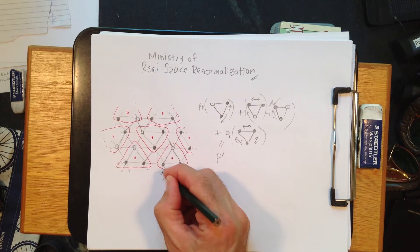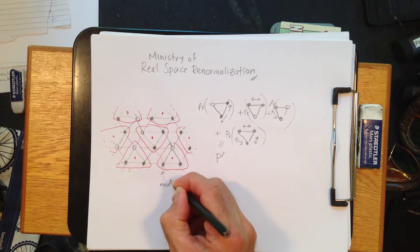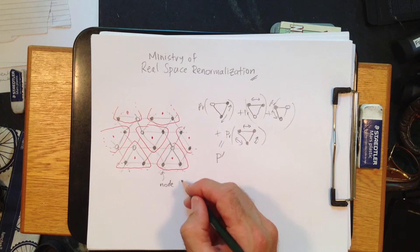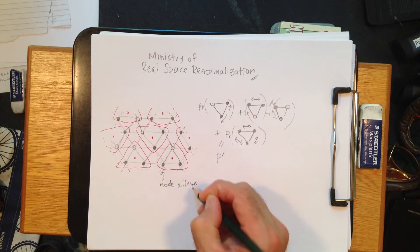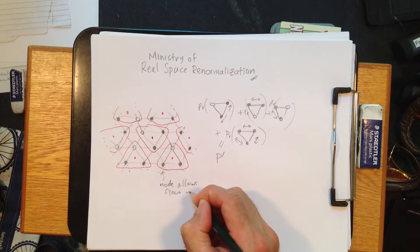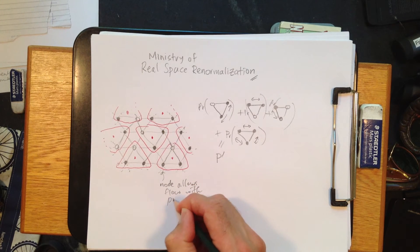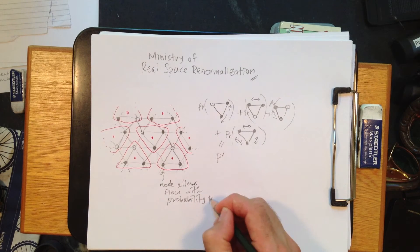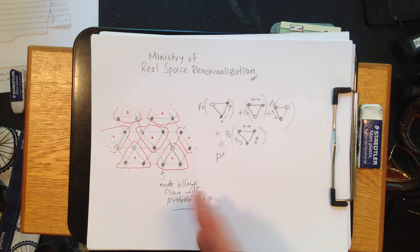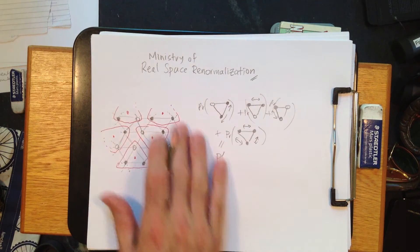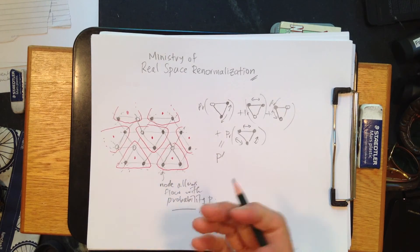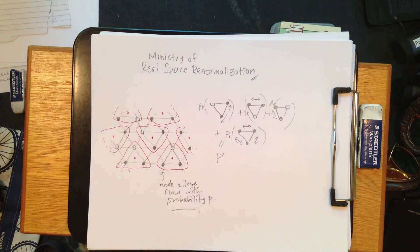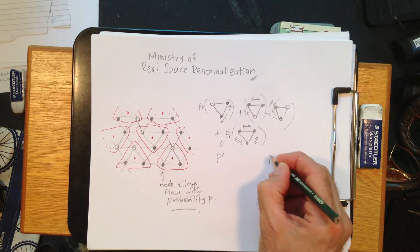So if the chance that a node allows flow with probability p, right? That's our base guy. And then the simple thing is, okay, so if p equals zero, then you're going to see that this next level, nothing's open. If p equals one, all of them are filled in. So we should get that. So p prime should equal one. If p equals one, p prime should equal zero.